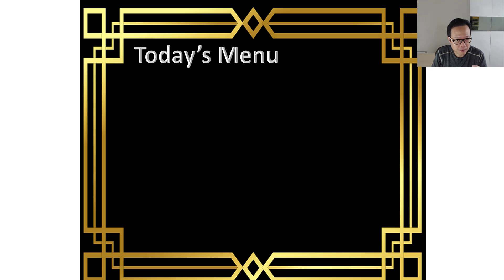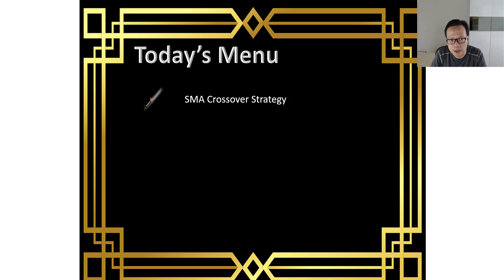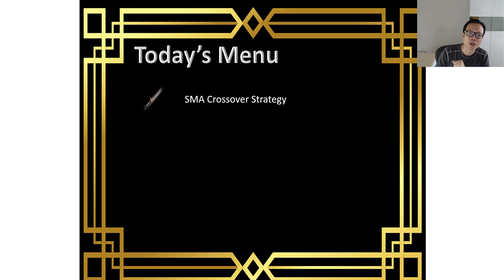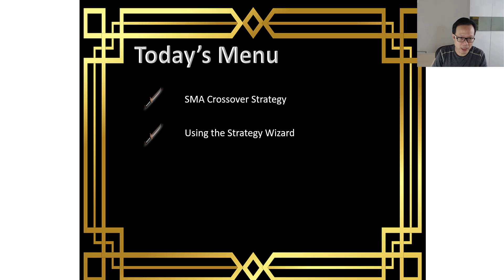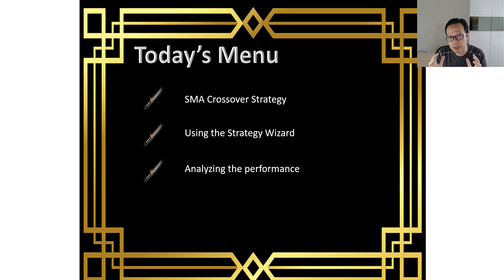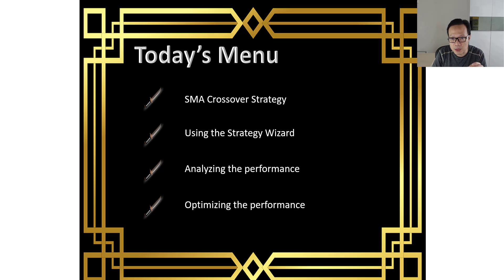Let's go over what we'll be covering today. First, we'll be looking at a strategy we want to create — a very basic moving average crossover strategy, just to illustrate backtesting capabilities in NinjaTrader. Take note: this is not some holy grail magic formula that is going to make you tons of money, so don't just use it to trade. Then we will see how we can create this moving average crossover strategy in NinjaTrader without writing a single line of code. After that, we will run the strategy and look at its performance. Finally, we will see how to use NinjaTrader's optimizer to find the best set of parameters.